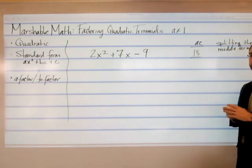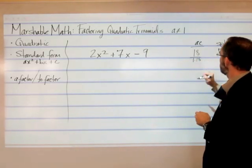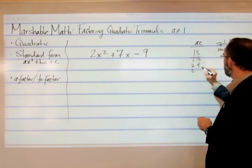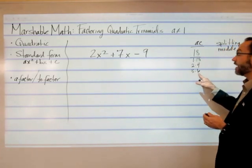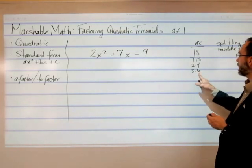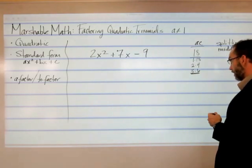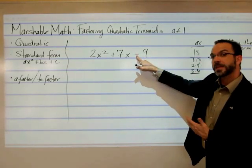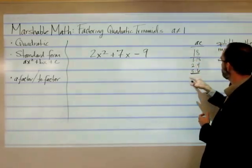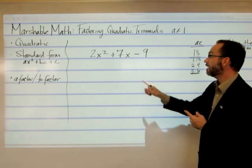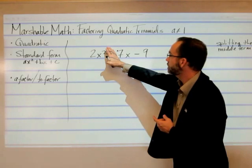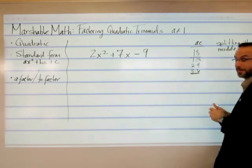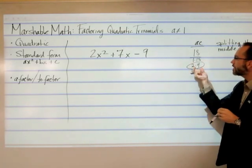Now I need to make a little list of all the factors of 18. Start off with 1 and 18. Then 2 and 9. And 3 and 6. 4 doesn't work, 5 doesn't work, and 6 we've already got on the right-hand side, so we're finished. Now I've got my list of factors. Which of these pairs, when I subtract them — because this is a minus sign — gives me the number 7? The 2 and the 9. So these are the ones I'm going to use to factor.